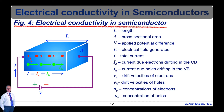As shown in the diagram, the current due to electrons is shown in red color with arrows, denoted as I subscript e, whereas the current due to holes is shown with green arrows, denoted as I subscript h. The total current I is equal to I subscript e plus I subscript h — that is, the total current is the sum of the current due to electrons and the current due to holes.